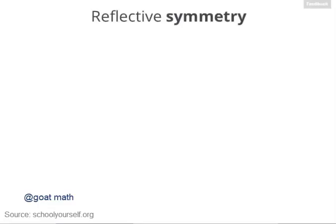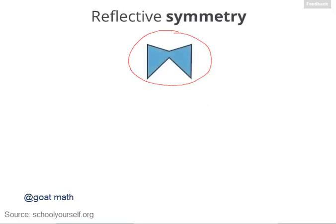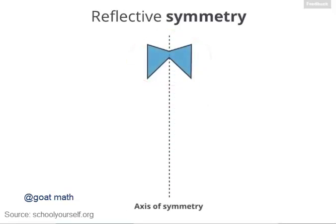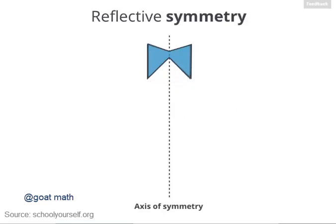Let's quickly define reflective symmetry. Consider this shape here. If we draw a line down the middle, you'll notice this is what's called an axis of symmetry. That means if you reflect or flip this shape over this axis, the shape is back to its original position. And that's what it means to say a shape has reflective symmetry.